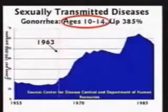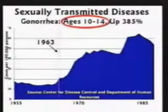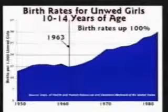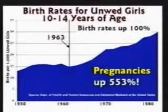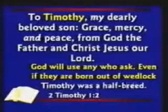1963 is when we saw a great rise in sexually transmitted diseases for kids 10 to 14 years of age. 1963 is when we began to see a rise in premarital sex for every age group. 1963 is when we saw a great rise in unwed birth rates for girls 10 to 14. Now the birth rates are up 100%, pregnancies are up over 500%, and the difference is being aborted. Right now, one-third of all kids born in hospitals are to a couple that's not married.